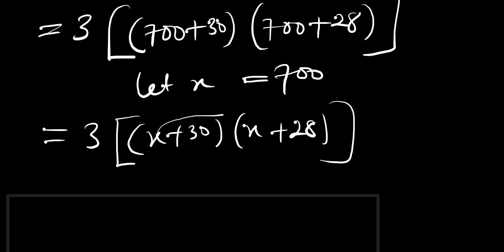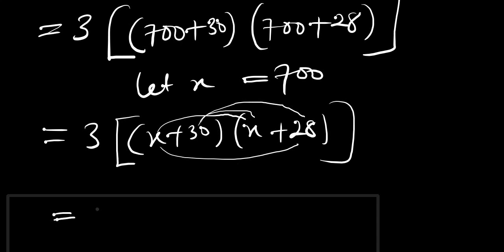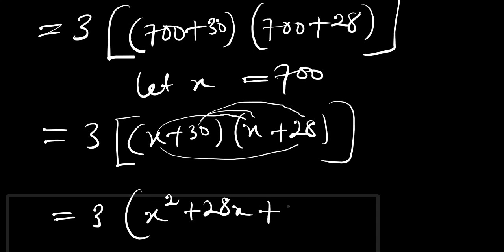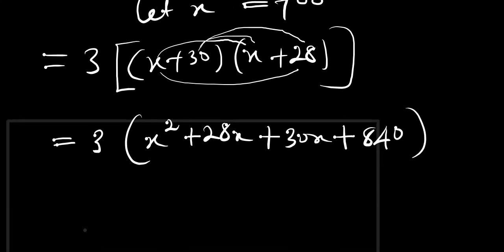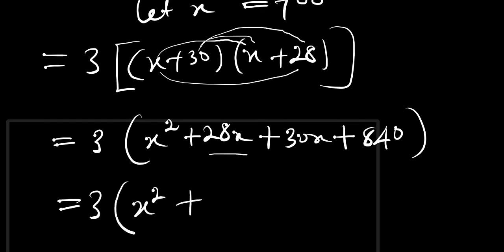Expanding (x+30)(x+28): x times x, x times 28, 30 times x, and 30 times 28. This gives us 3 times (x² + 28x + 30x + 840), which simplifies to 3 times (x² + 58x + 840).